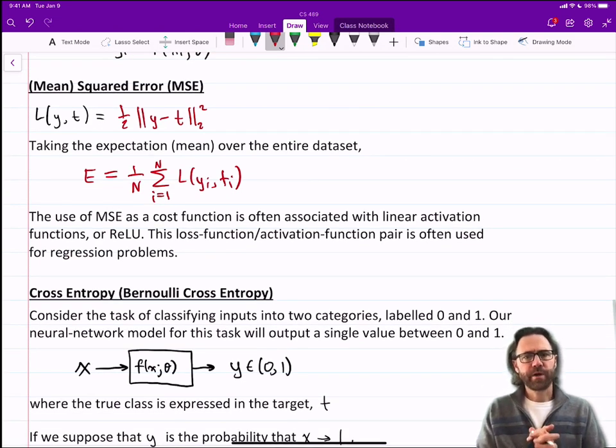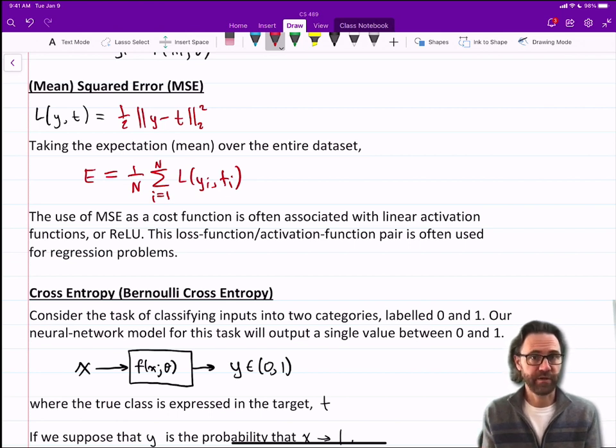The use of mean squared error as a cost function is often associated with linear activation functions or ReLU. ReLU is kind of linear on one side anyway. This loss function activation function pair, MSE with a linear activation function, is often used for regression problems.